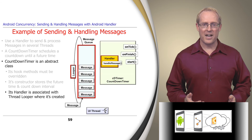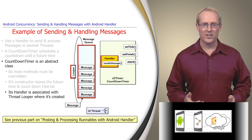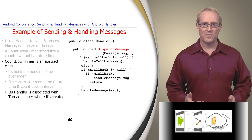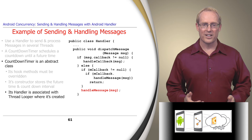The path through the handler, message queue, and looper code is essentially the same as the path for posting and processing runnables, as shown in the previous video. The main difference is that the handler's dispatch method invokes the overridden handleMessage hook method instead of the run hook method of the encapsulated runnable.